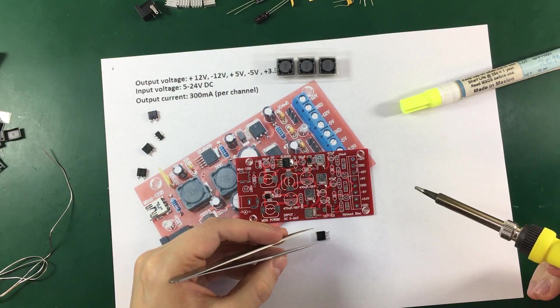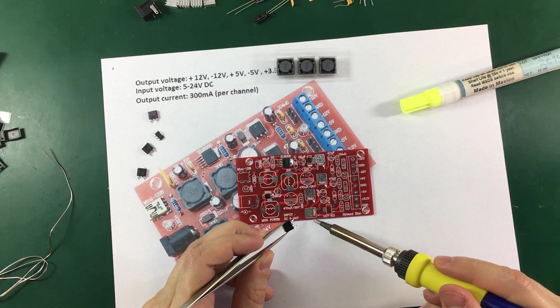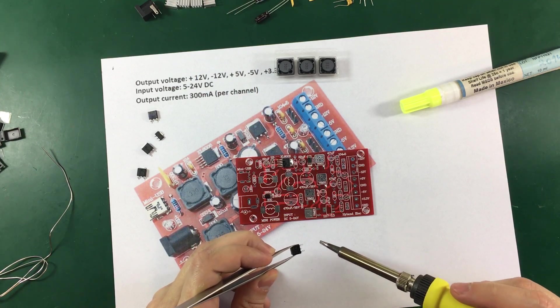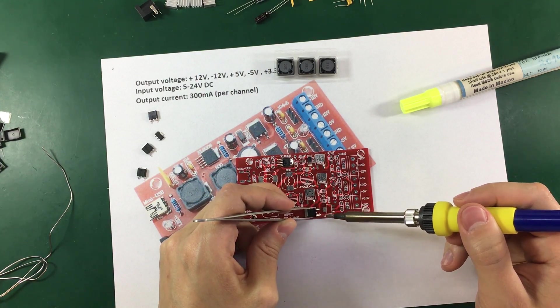Now for the actual regulators. Make sure you solder the right one in the right place. For example here I need to solder the 79M05. So this is the negative rail 5 volt regulator. And I got the right one.